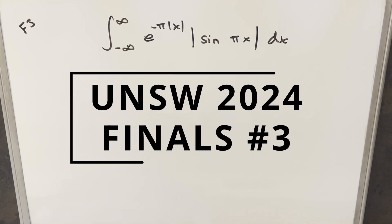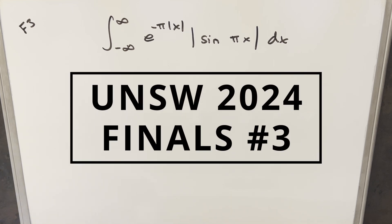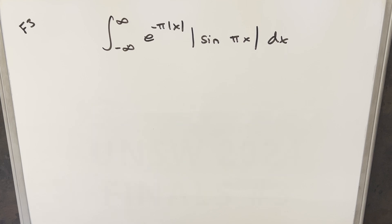Okay, we have a tough one today. This one's from the UNSW Integration Bee 2024 Finals, number three. We have the integral from minus infinity to infinity of e to the minus pi times absolute value of x, times absolute value of sine pi x, dx.